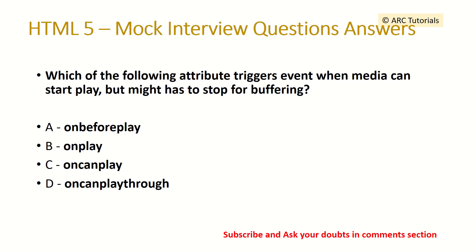Question 8: Which of the following attributes triggers an event when media can start playing but might have to stop for buffering? Options: onbeforeplay, onplay, oncanplay, or oncanplaythrough. The answer is oncanplay — that is the attribute used to trigger an event when media can start play but might have to stop for buffering.